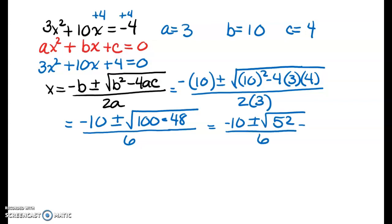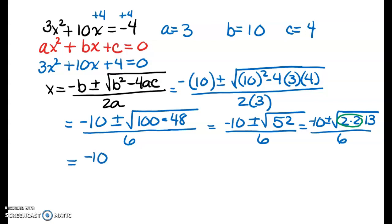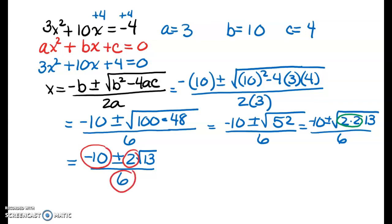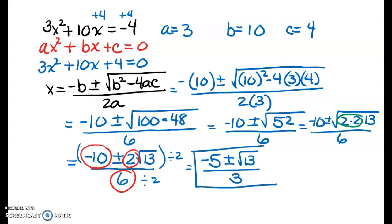How do I simplify the square root of 52? Well, 52 is 2 times 26, and 26 is 2 times 13, and 13 is prime. I have a nice group of two 2s, so I get negative 10 plus or minus 2 square root of 13, all over 6. Looking at my numbers, they're all divisible by 2, so I factor out a 2 and get negative 5 plus or minus the square root of 13 over 3. That's my final answer, because negative 5 and radical 13 are not like terms.